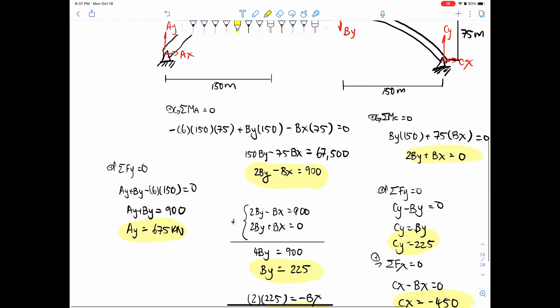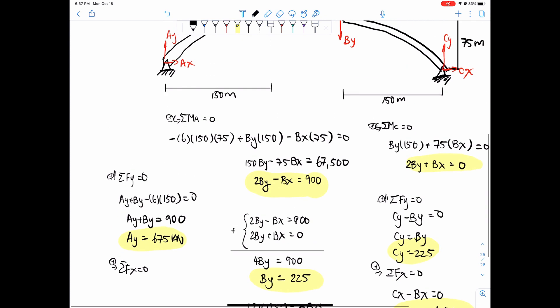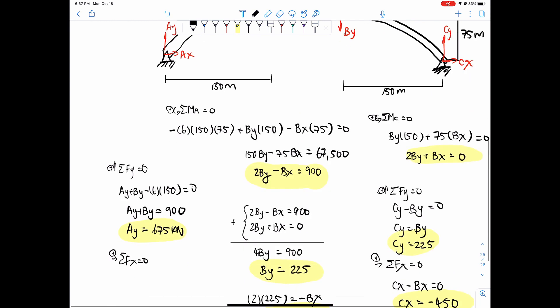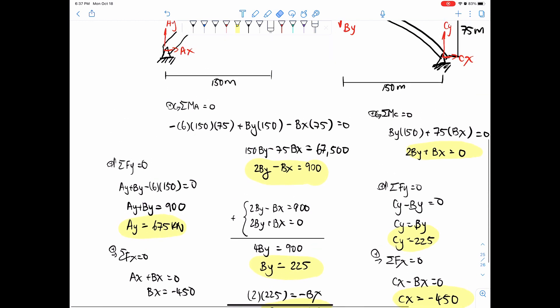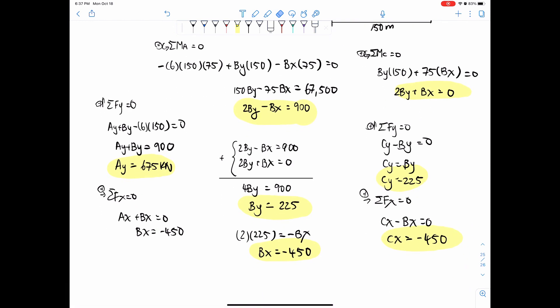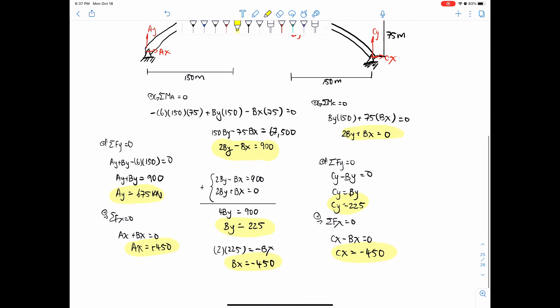And then finally, solving for AX, so sum of forces in the X direction equals 0. Just look at your sign convention and what you set as positive, so AX plus BX equals 0. And since BX is equal to negative 450, we could just set that equal to AX, and that's positive. Because BX is negative 450, move that to the other side, and then you would get a positive value.